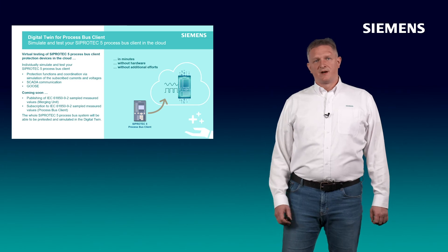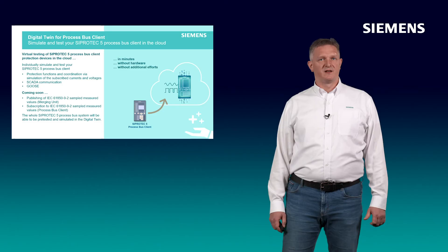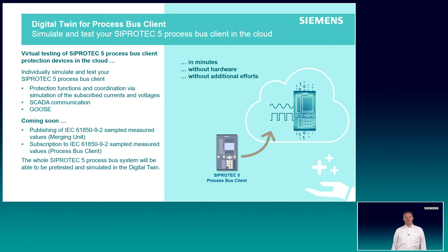With the digital twin of SIPROTEC 5, you can individually simulate and test your SIPROTEC 5 process bus clients. Test protection functions and protection coordination via simulation of the subscribed currents and voltages. Test data communication and GOOSE signals between SIPROTEC 5 devices. In future, you will be able to simulate the whole SIPROTEC 5 system within the digital twin, including publishing of sampled values by the merging unit and subscription of those streams to the SIPROTEC 5 protection device.